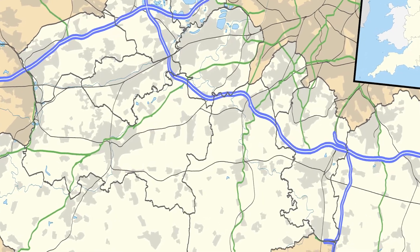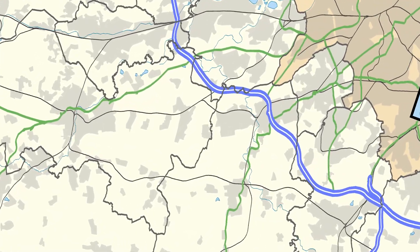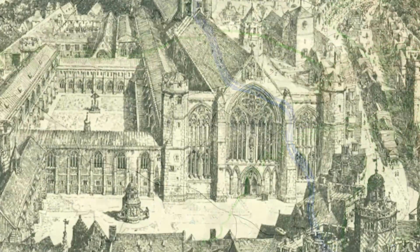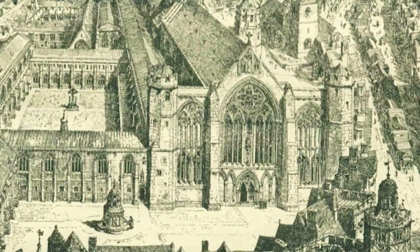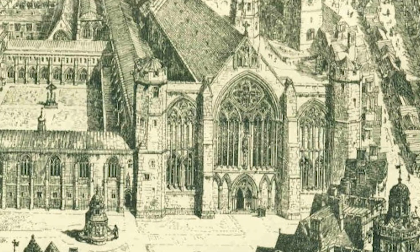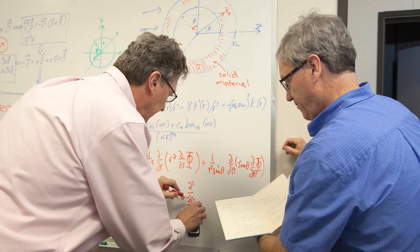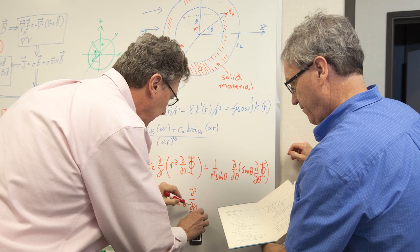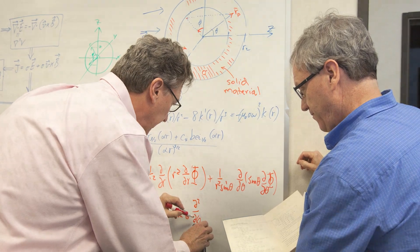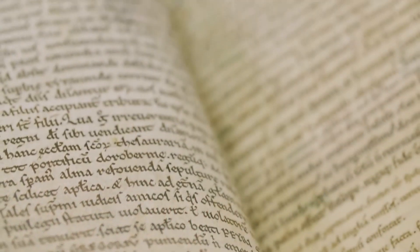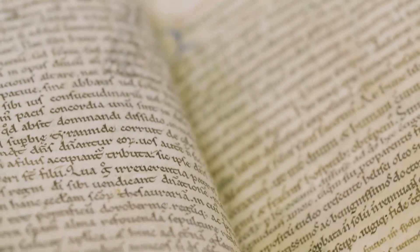William of Ockham was born around the year 1288 in the town of Ockham, southwest of London, England. He was raised in a Franciscan friary, educated, and inducted into their order. His early education would have included learning basic arithmetic, reading the Bible, and studying the lives of the saints.